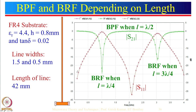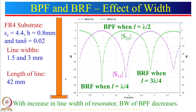The S11 response shows that when nothing goes to the output everything reflects back, and when everything goes to the output nothing reflects back. For the band pass filter the bandwidth obtained is very large, and we may have applications where we want smaller bandwidth. By increasing the resonator width from 0.5 mm to 3 mm, the bandwidth of the band pass filter is reduced. So by increasing this width, we can decrease the bandwidth of the band pass filter.